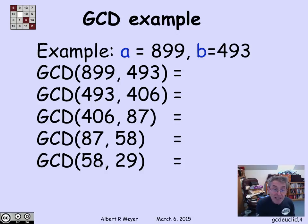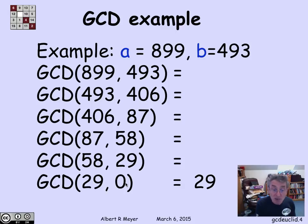When I divide 58 by 29, I get a remainder of 0. And the GCD of anything and 0 is that thing. So the GCD of 29 and 0 is 0. The only exception is the GCD of 0 and 0, which is not defined. But if it's not 0, then the GCD of x and 0 is x. So I've just found that the GCD of 899 and 493 is 29.